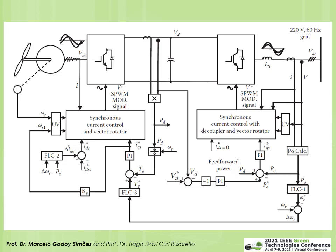FLC2 (fuzzy logic controller 2) optimizes the flux of the machine: it generates an IDS command to reduce machine flux and improve efficiency. FLC3 (fuzzy logic controller 3) in the middle acts as a fuzzy PI, receiving the angular speed reference from FLC1 and generating IQS — the quadrature current for vector control to impress the machine torque. The machine drives a vertical-axis wind turbine with oscillating and pulsating torque, and FLC3 contributes to robust speed control.